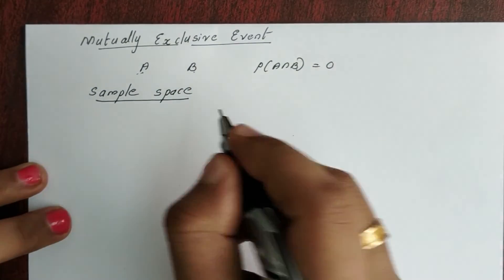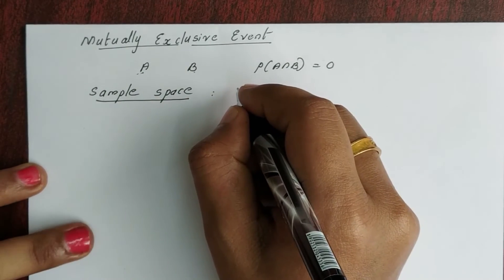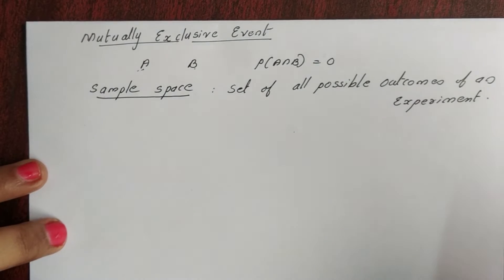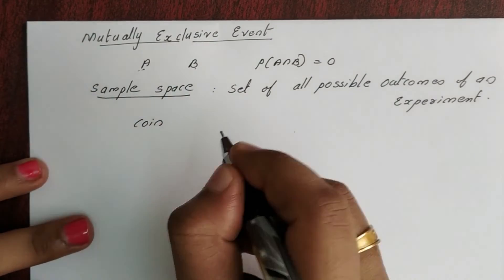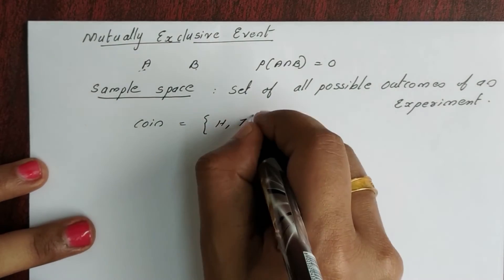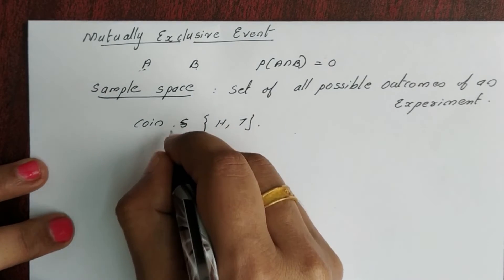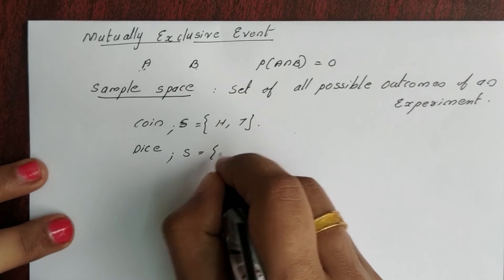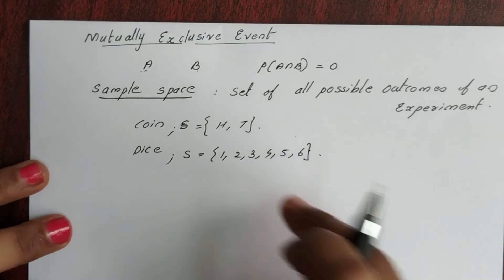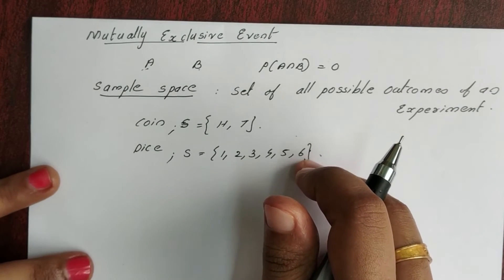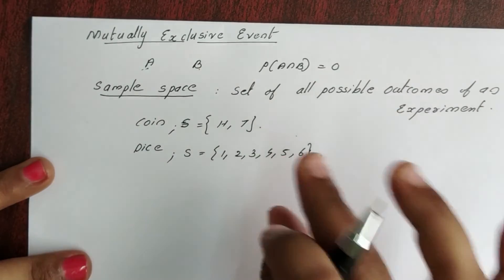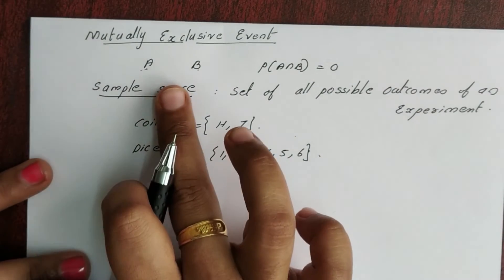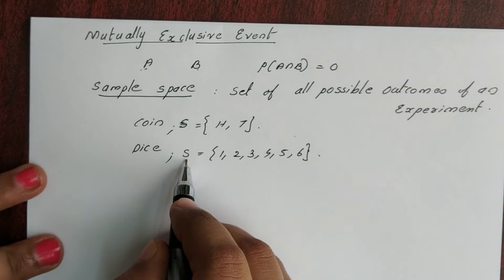Next is Sample Space. Sample space is the set of all possible outcomes of an experiment. For example, suppose a coin is tossed — we have head and tail. We write sample space S. If we throw a die, the sample space S is equal to {1, 2, 3, 4, 5, 6}. Sample space is denoted by S.